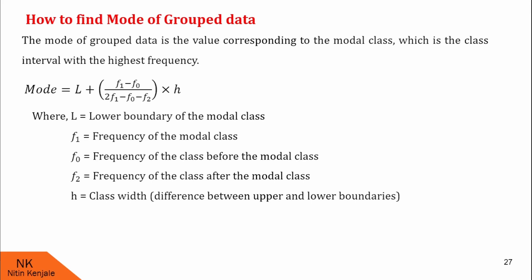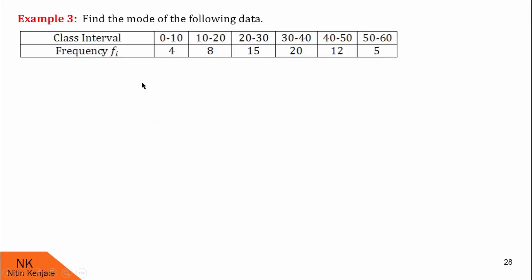Now let us see examples based on mode of grouped data. Here in this example, we are asked to find mode of the following data. Look at this data. This is grouped data. First row has class intervals and second row has corresponding frequencies. Let us proceed for the solution. Let us first identify the modal class. The modal class is the class with the highest frequency. Here we see highest frequency is 20. Therefore corresponding modal class is 30 to 40.